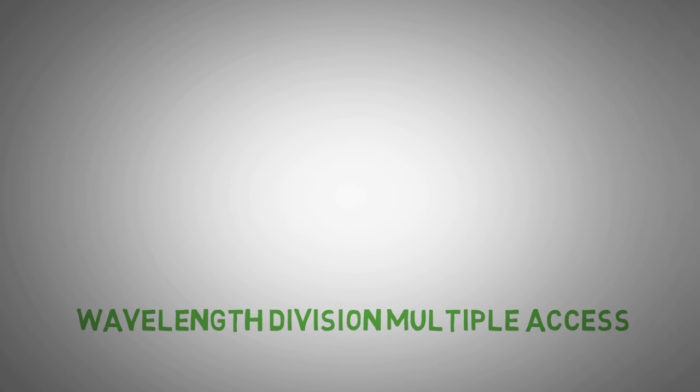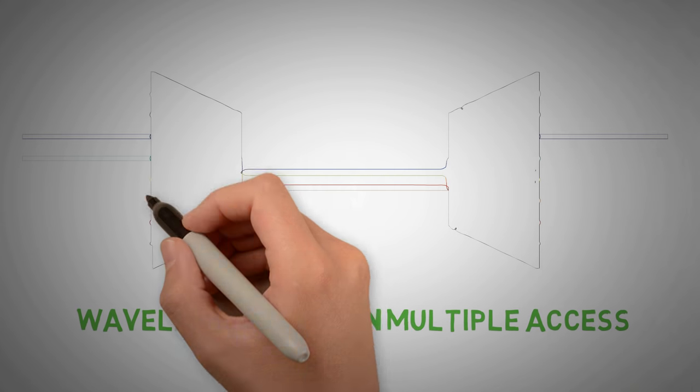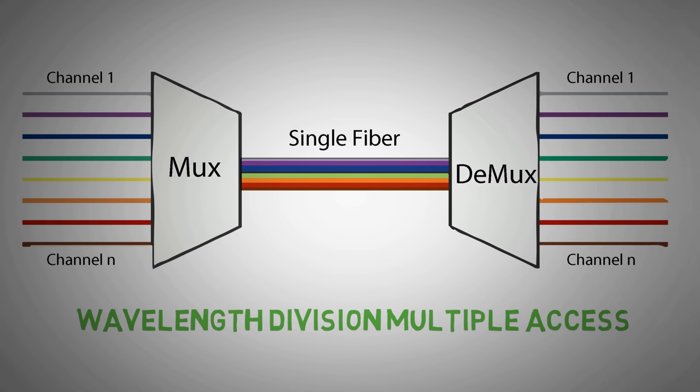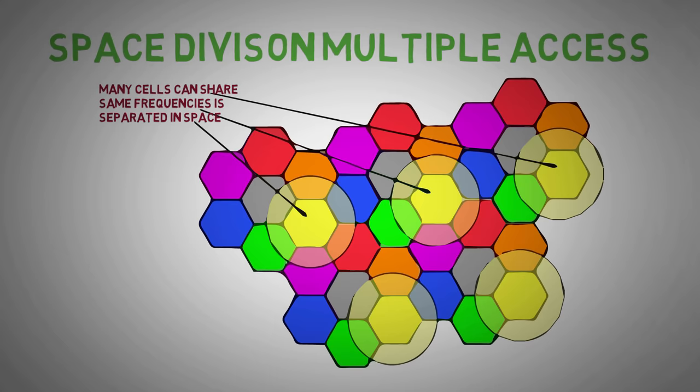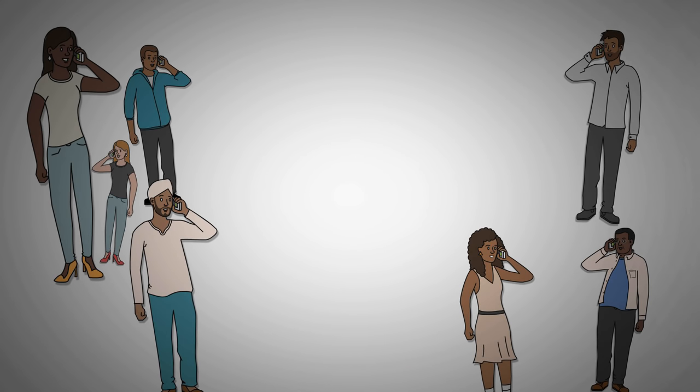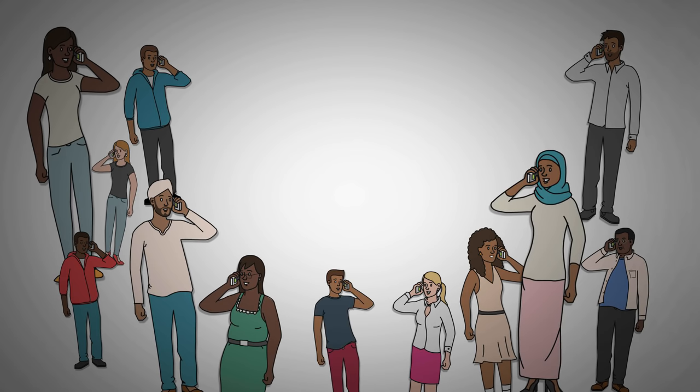There are other multiple access techniques like wavelength division multiple access, which is used in fiber optics, and space division multiple access, which refers to spectrum reuse over non-overlapping areas. As the number of users and their demand started growing, communication networks evolved from 1G to 4G.